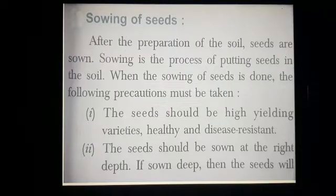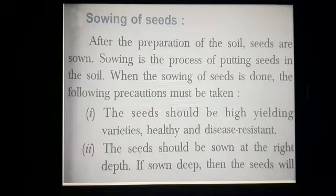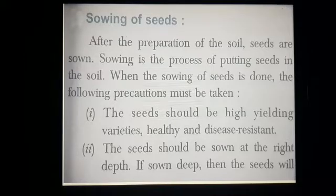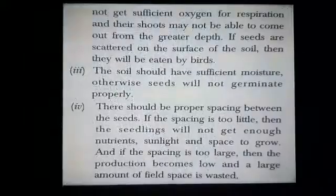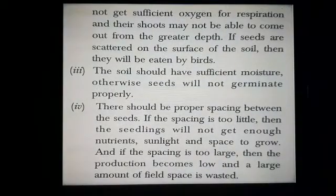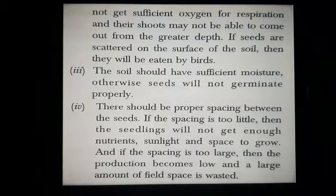Many factors are related to sowing of seeds. First is time of sowing, second is depth of sowing, third is temperature of our surroundings, humidity of the soil, and pH value of the soil — all are very important for sowing of seeds. The soil should have sufficient moisture; otherwise, seeds will not germinate properly. Proper space and proper depth between two seeds must be maintained.